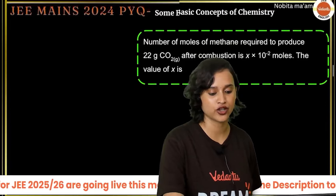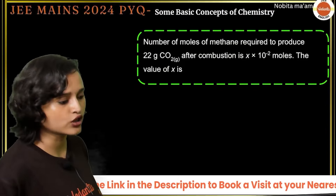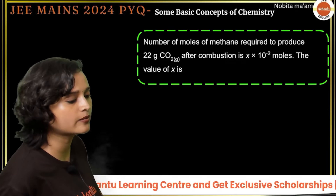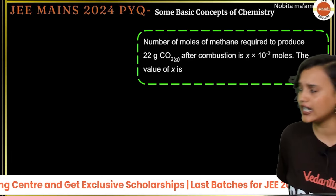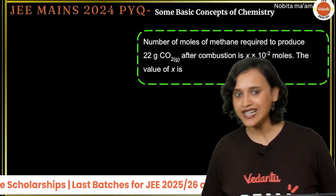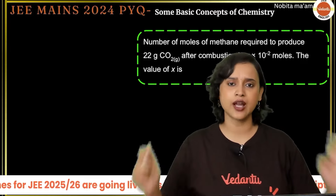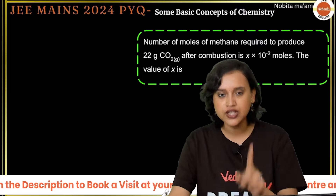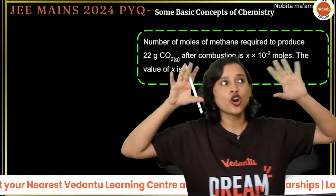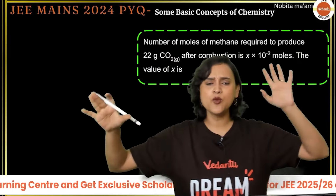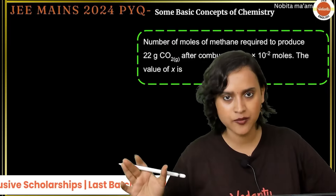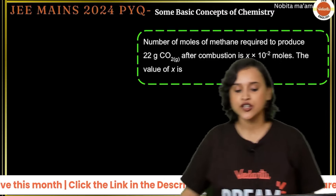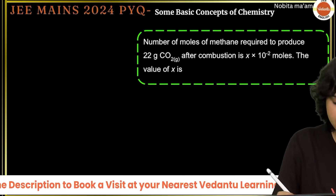This is a very similar type of question to what we already solved, but it appeared in another shift. In JEE Mains, there are multiple shifts per day — a morning shift and an evening shift — with roughly one lakh students each. The balanced equation is: CH₄ + 2O₂ → CO₂ + 2H₂O.